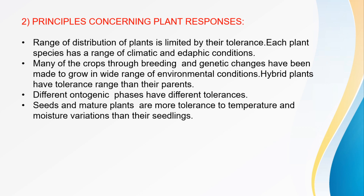Hybrid plants have a wider tolerance range than their parents. Different ontogenic phases have different tolerances — seeds and mature plants have more tolerance to temperature and moisture variations than their seedlings.